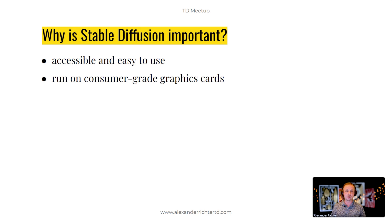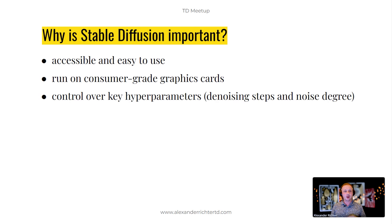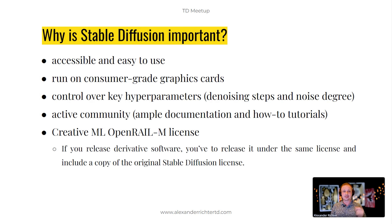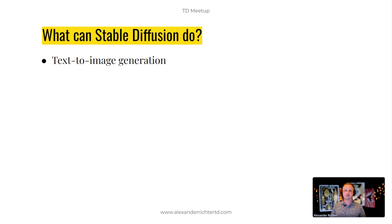Stable Diffusion runs on consumer-grade graphics cards — I can run it on my laptop, which isn't easily done with normal machine learning. You can control things like denoising steps, noise degree, and so on, unlike ChatGPT where there's not much control. It's an active community with a lot of help available, and the license is very clear: if you release software using it, you have to release under the same license.